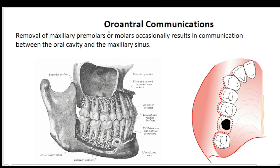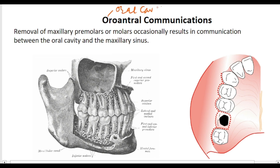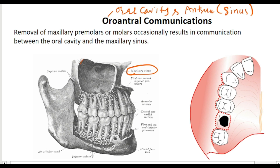First, we will talk about what is Oroantral Communication. The word itself suggests that it is a communication between the oral cavity and the antrum — you can also call it the sinus. Here you can see in this diagram: this is the maxillary sinus and this is the oral cavity. Sometimes a communication is formed between the sinus and the oral cavity, and that communication is called Oroantral Communication.